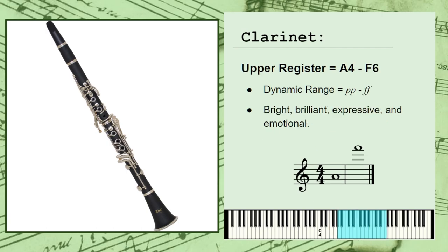The upper register spans from about A4 to F6, with a general dynamic range of pianissimo to fortissimo, or super soft to very loud. This register has a very bright, brilliant, expressive, and emotional quality. This is the register most commonly associated with melodies played on the clarinet.